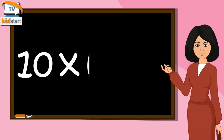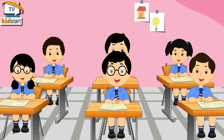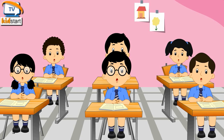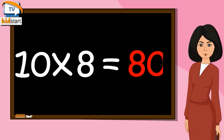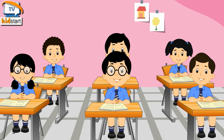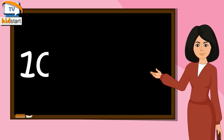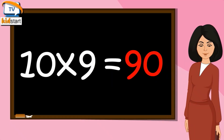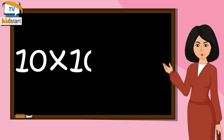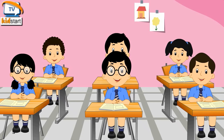10 sixes are 60, 10 sevens are 70, 10 eights are 80, 10 nines are 90, 10 tens are 100.